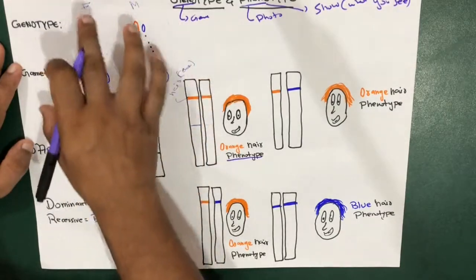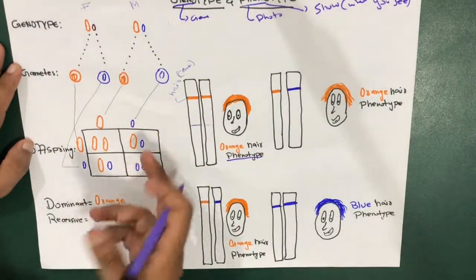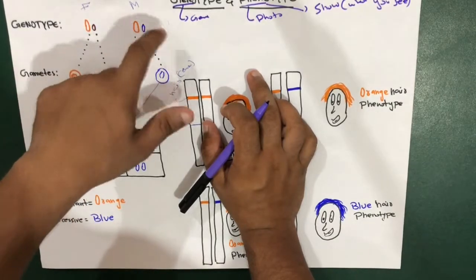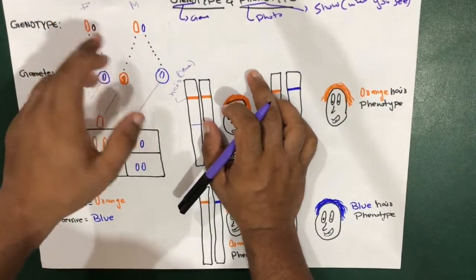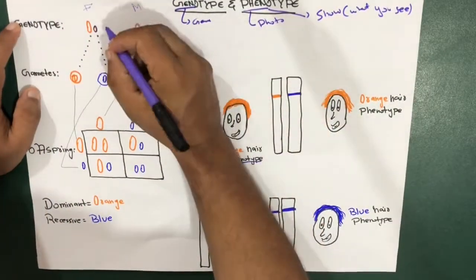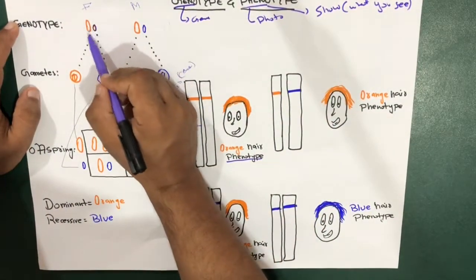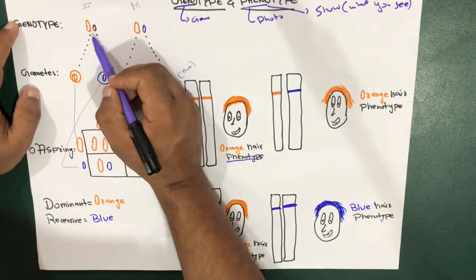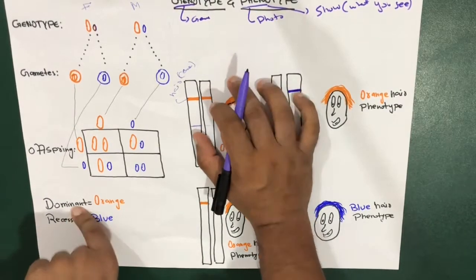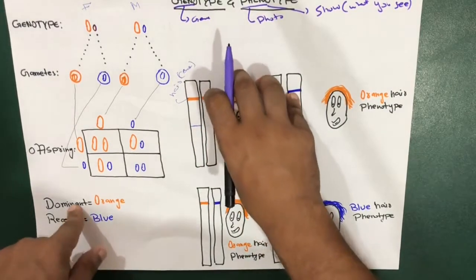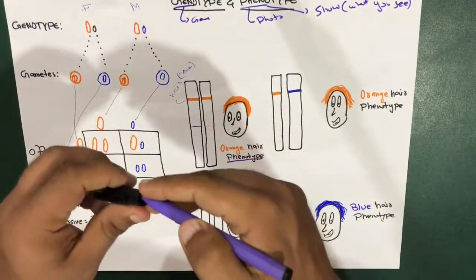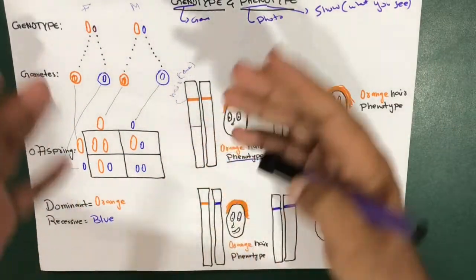Let's move to this Mendelian test cross example. Consider this is the genotype from your father and this is the genotype from your mother — they both have pretty much the same genotype. In this section, we have considered O — the orange color — as dominant. What does dominancy mean here? Dominancy means even if the recessive is present alongside the dominant, the dominant gene is going to show its characteristics.